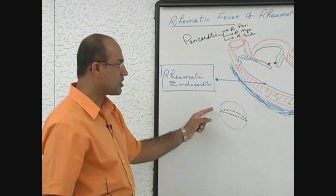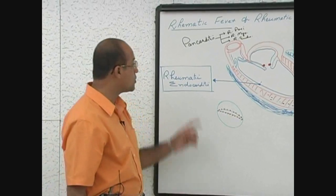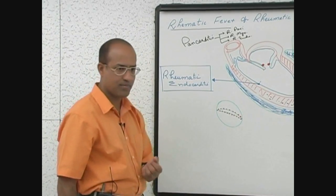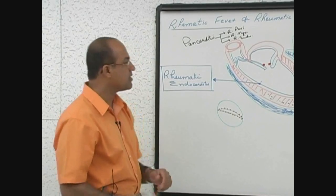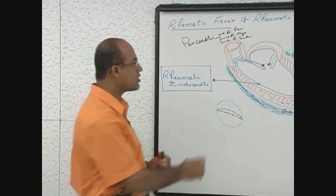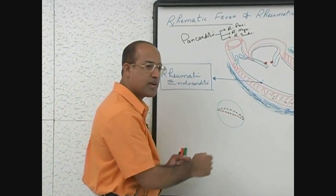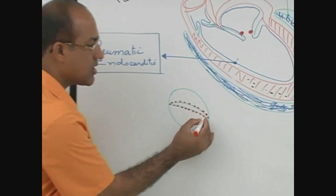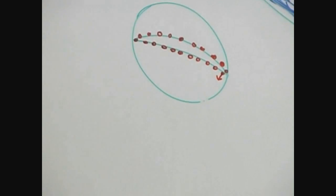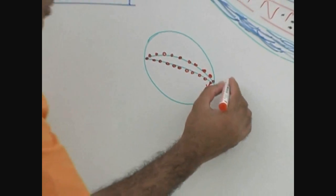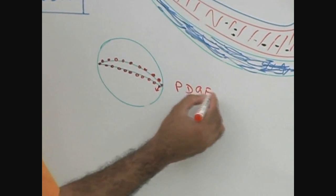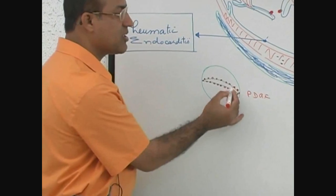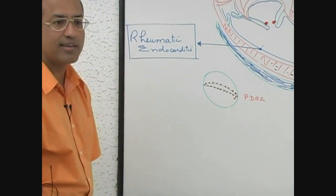Multiple rheumatic vegetations are formed during acute rheumatic endocarditis. When fever is over, these vegetations heal. They contain a lot of platelets, and platelets from these vegetations release platelet-derived growth factor. When they are healing, a lot of fibroblasts are activated and those fibroblasts lay down collagen.